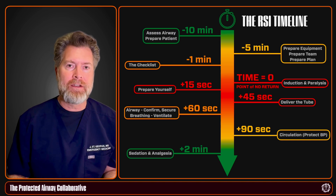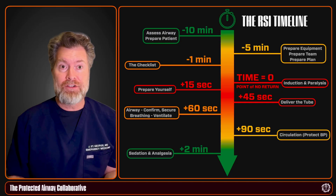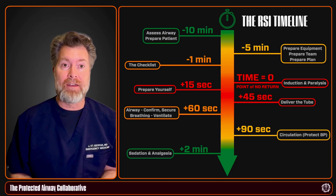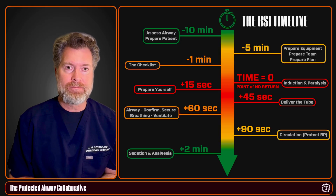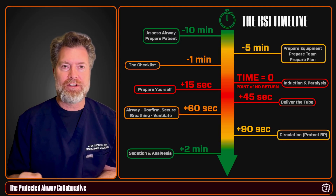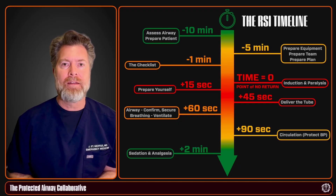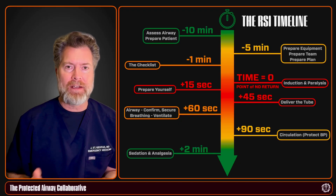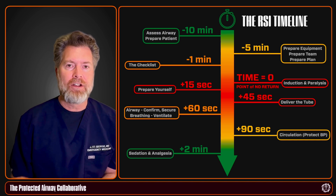Now that the airway is secure, hemodynamics are stable, and the patient is comfortable, you can move on to the next steps of your resuscitation and figure out what's going on so you can help them. That's the RSI timeline. We have a wonderful 'Own the Head of the Bed' section on the Protected Airway Collaborative website that goes into all of this in detail — go ahead and check it out.